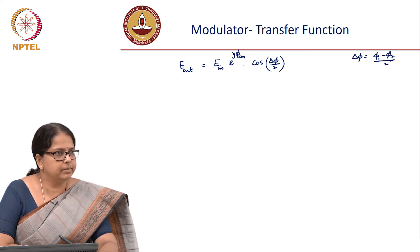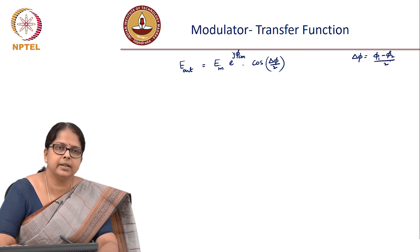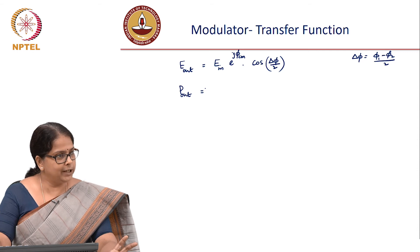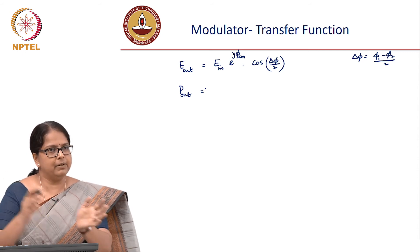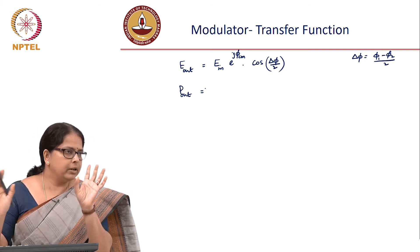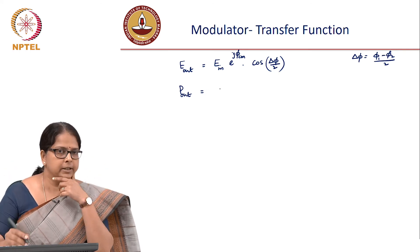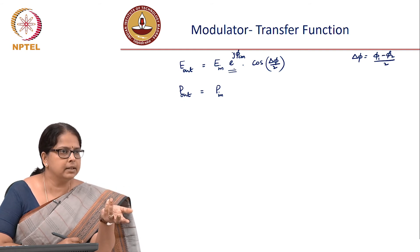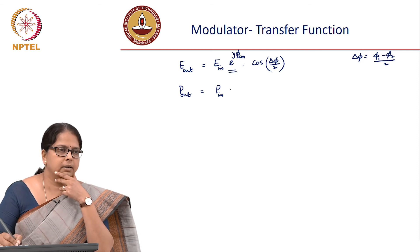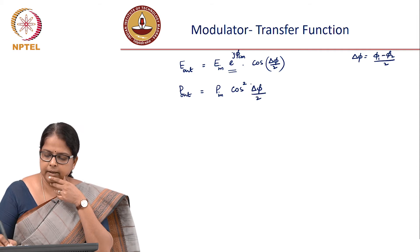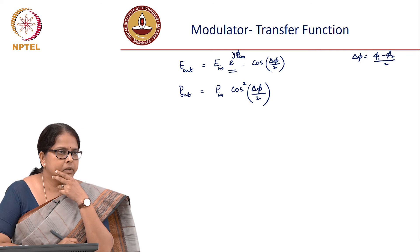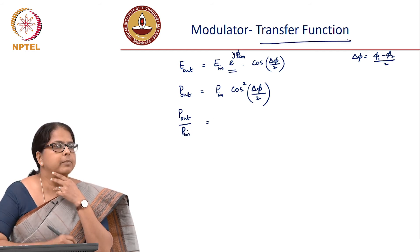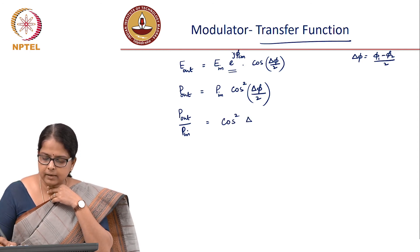How do we find the power output? Since we are doing intensity variation, we are interested in intensity, not field variation. P_out is the mod-square of E_out. The common-mode phase factor e^{j phi_cm} has no contribution to power. Assuming no loss in the modulator, P_out divided by P_in equals cos²(delta_phi / 2). This is what we call the transfer function of the modulator.